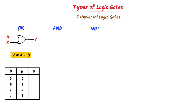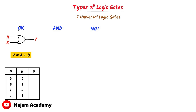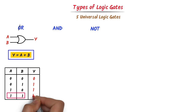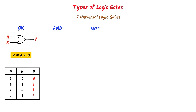Consider the OR gate truth table. The possible values of AB are 00, 01, 10, and 11. The OR gate sums the inputs: 0 plus 0 equals 0, 0 plus 1 equals 1, 1 plus 0 equals 1, and 1 plus 1 equals 2 — but in Boolean algebra there is no digit 2, so 1 plus 1 equals 1. This is the truth table of the OR gate.